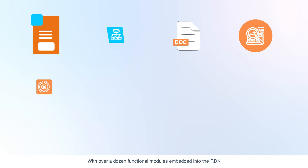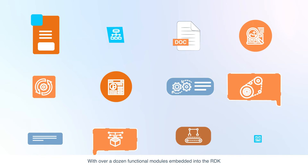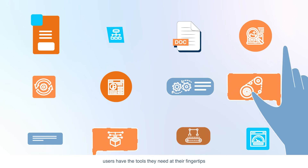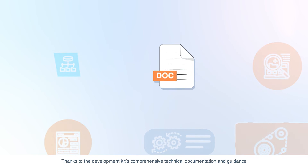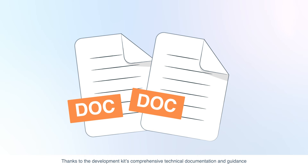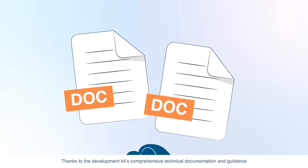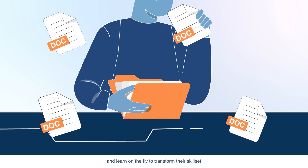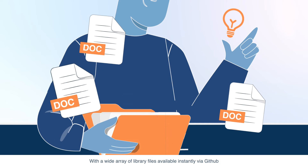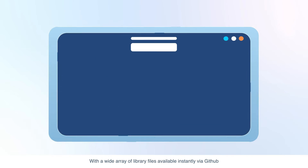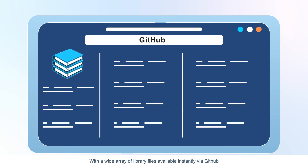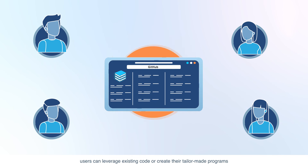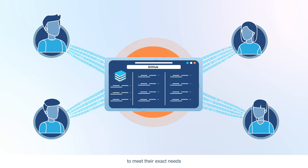With over a dozen functional modules embedded into the RDK, users have the tools they need at their fingertips. Thanks to the development kit's comprehensive technical documentation and guidance, beginners can delve into programming and learn on the fly to transform their skill set. With a wide array of library files available instantly via GitHub, users can leverage existing code or create tailor-made programs to meet their exact needs.